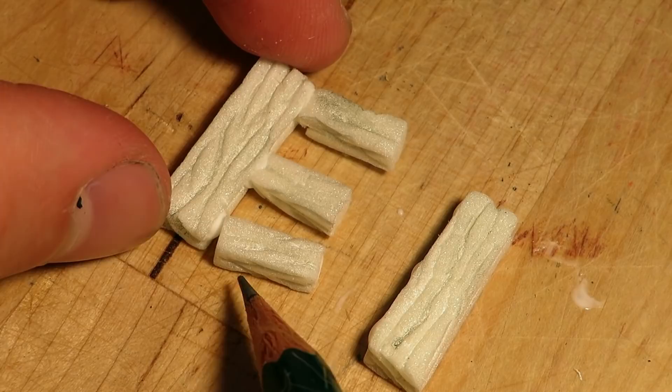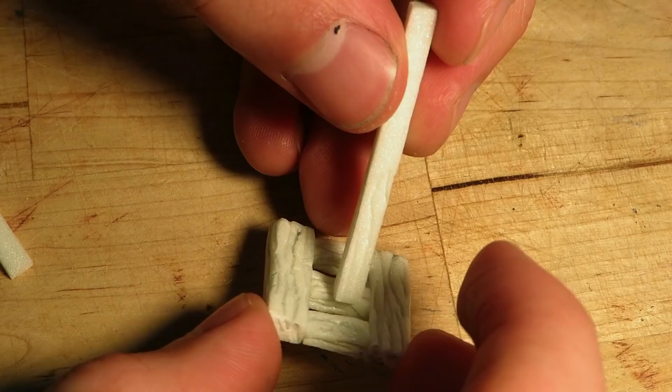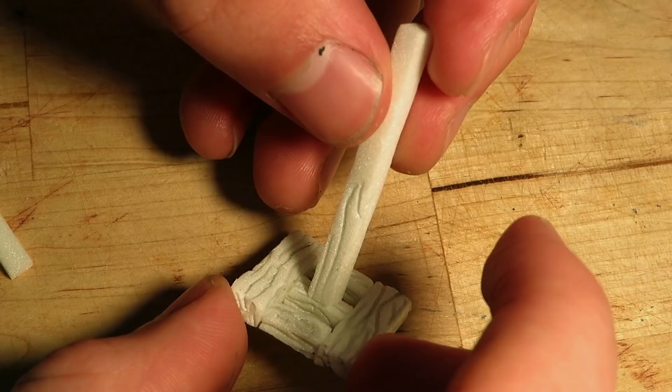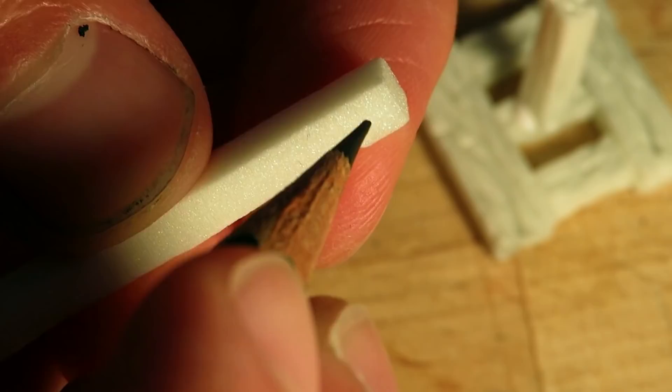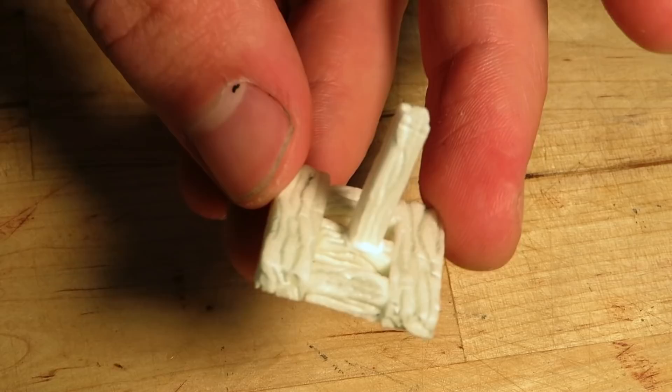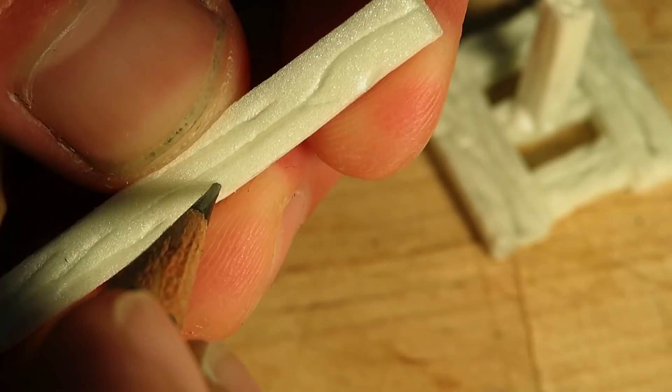Now I will continue building the ballista frame and then we will make the weapon itself. I glued in this wooden beam in the middle of the base. Then I textured a few more wooden beams that will be used to support the one we just glued in the middle of the base. I cut the beams at an angle, so they will fit like this.